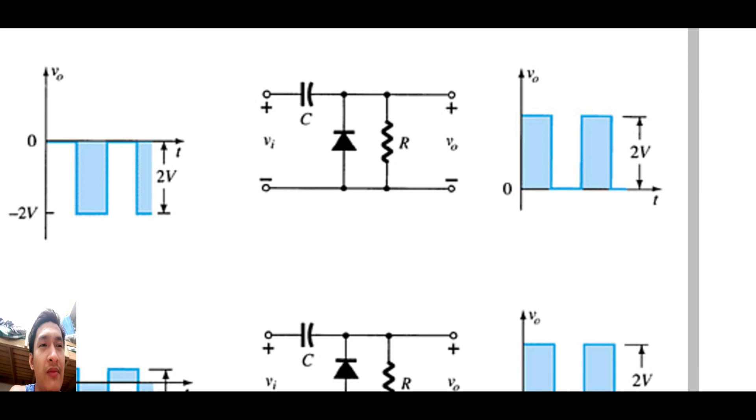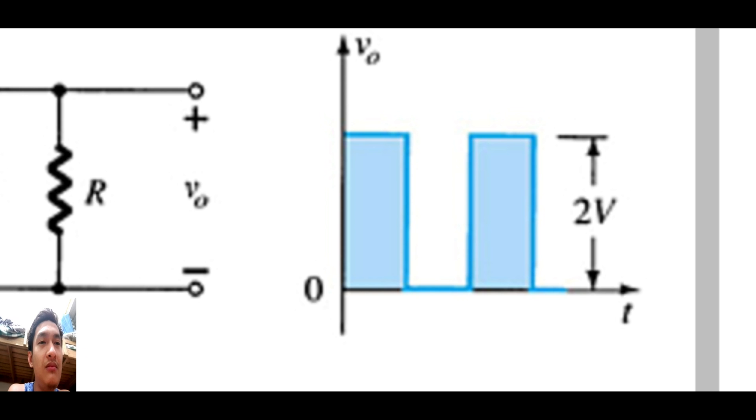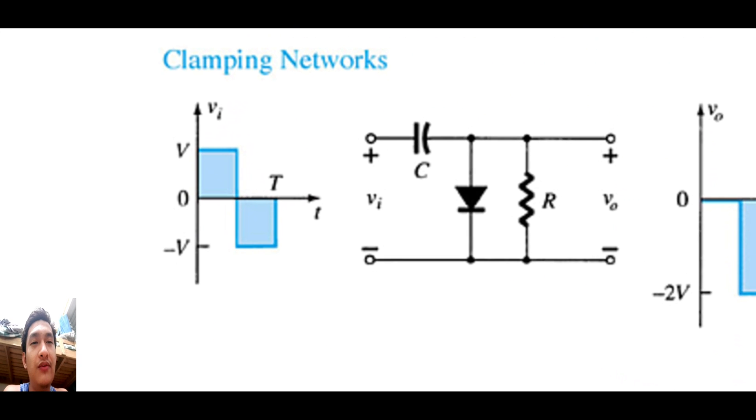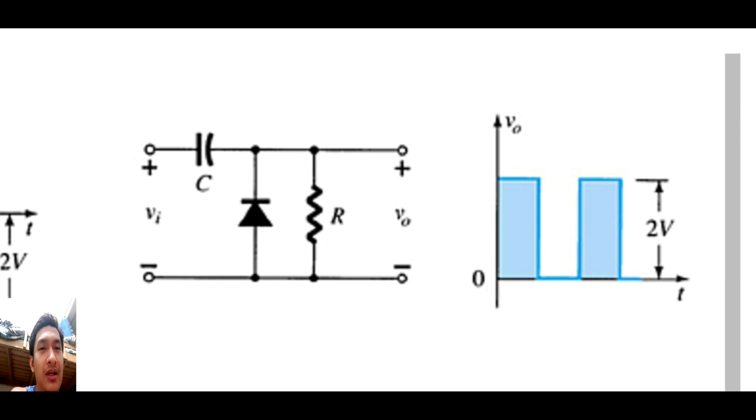So this circuit that she was asking me is this one. How do you analyze this circuit so that you get this output? So if you're given an input of this one, how do you analyze the circuit so that you'll get this part here?